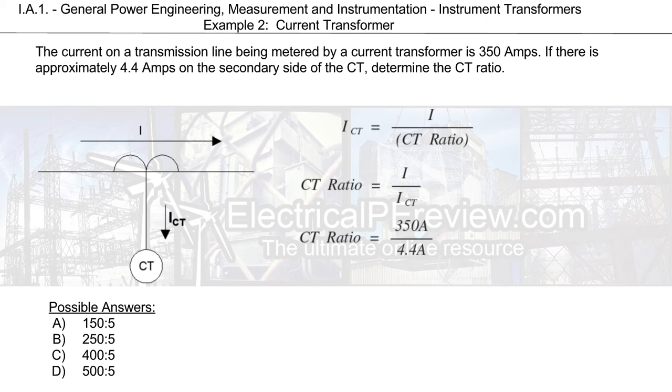So we plug that into our calculator and we come up with 79.5. Quick thing to point out, since we're dividing amps by amps, this is a ratio and this value is unitless.